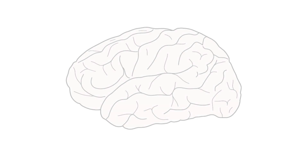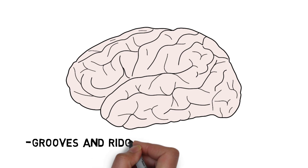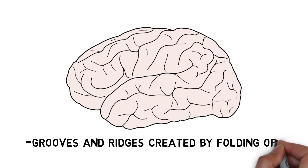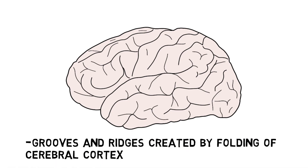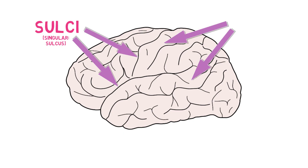One of the most distinctive features of the human brain is that its surface is covered with a complex pattern of grooves and ridges. These grooves and ridges are created by the folding of the outer layer of neural tissue, the cerebral cortex. The grooves are called sulci, and the ridges are called gyri.